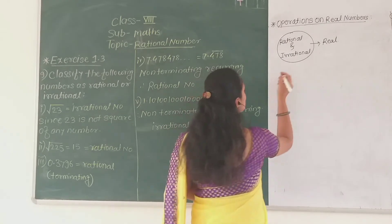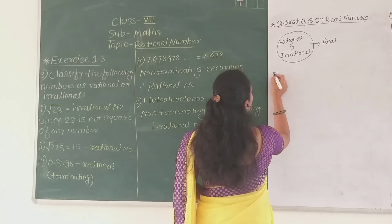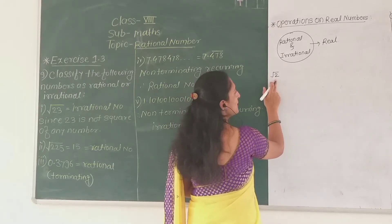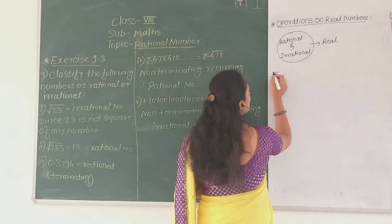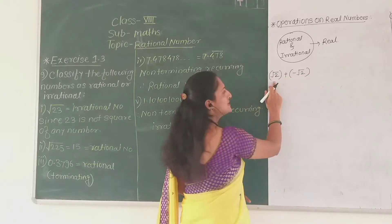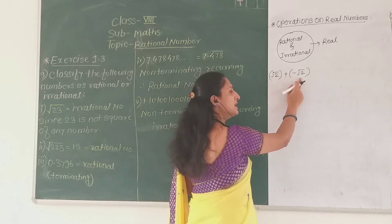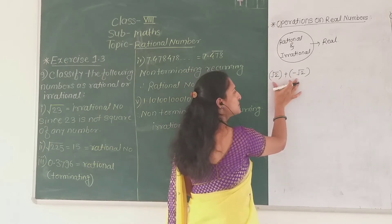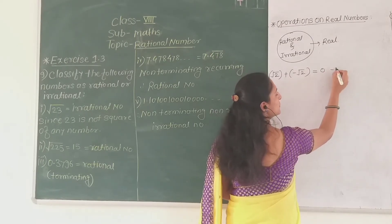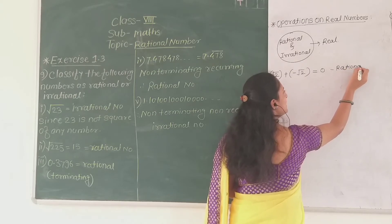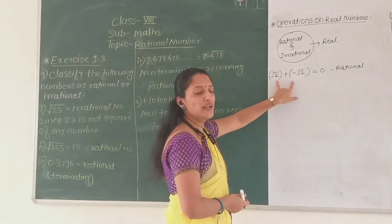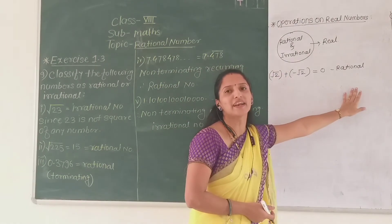Suppose square root of 2 is an irrational number. If I add root 2 and negative root 2 — now root 2 is irrational and negative root 2 is also irrational. If we add these two numbers, we get 0. But is 0 an irrational number? No — 0 is a rational number. That means addition of two irrational numbers is not always an irrational number.